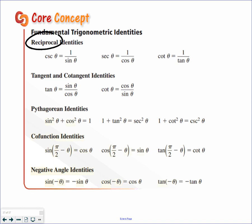First are the reciprocal identities. Cosecant is 1 over sine, and we used that when we did our graphing. Secant is 1 over cosine, and cotangent is 1 over tangent. Tangent and cotangent: tangent is sine over cosine, and cotangent is cosine over sine. We used that when we did our graphing, the underlying curve.